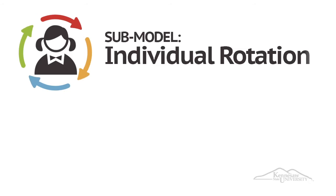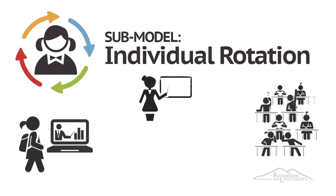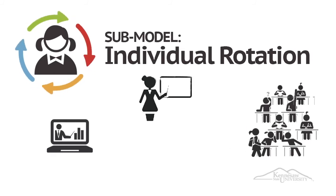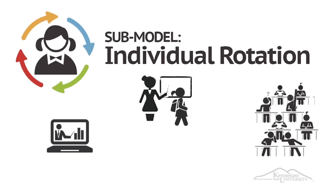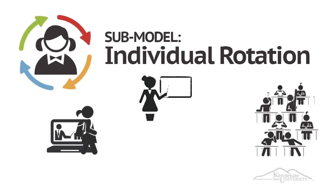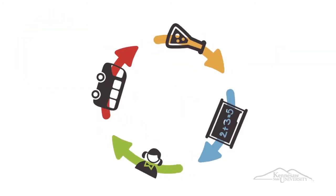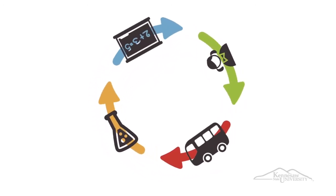The last sub-model of Rotation is Individual Rotation. In this sub-model, students rotate on a custom or individualized schedule among learning modalities, at least one of which is online learning. Students get a more customized learning experience as they are guided by their teacher to learn online and using other modalities. Clever teachers practice this model as a differentiation strategy in classrooms with students who need remediation or extension activities. These four rotation sub-categories can help any classroom teacher provide blended opportunities.